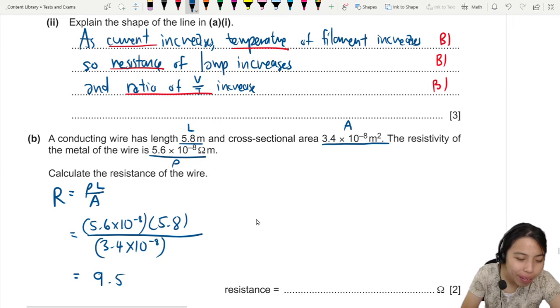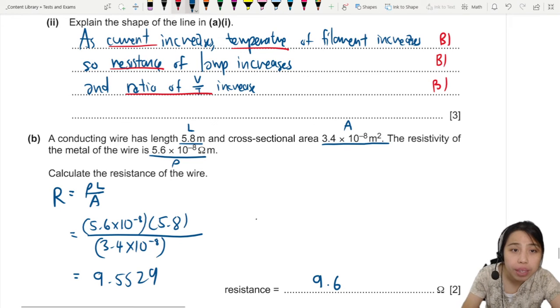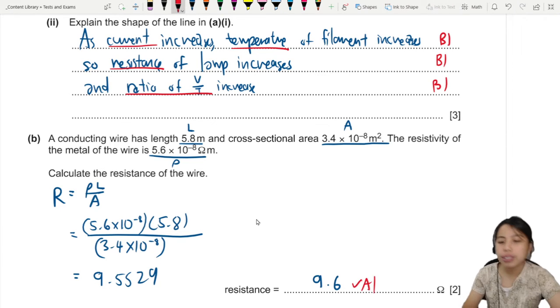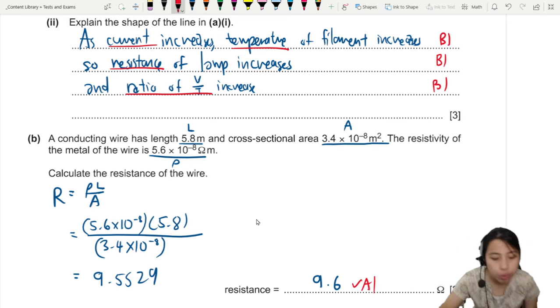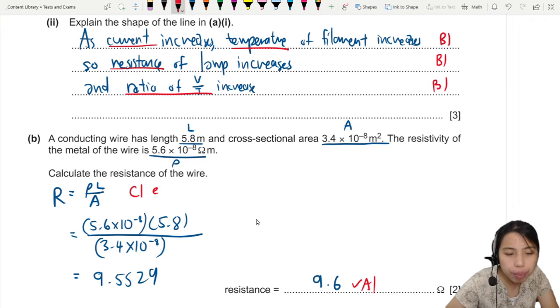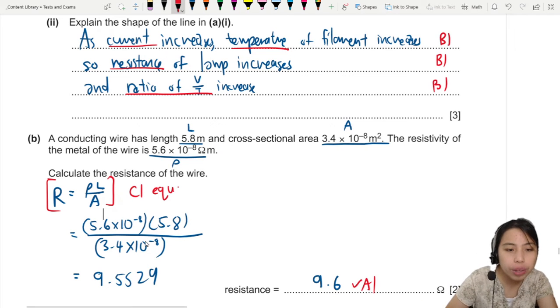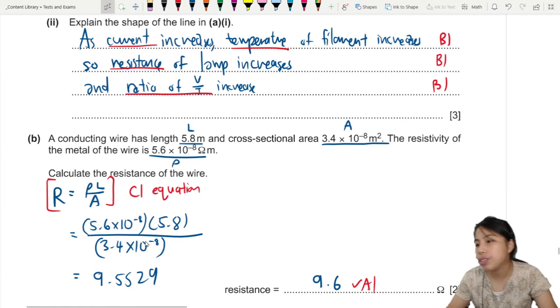So this one should be 9.5529, roughly 9.6. So you check your answer. You should get about 9.6. That's your final work. Accuracy mark. Now if you wrote the equation down though, that's very important to always start by writing out the equation first before you put in all the numbers. Because then I can clearly see you know the equation, I can give you a mark. C1.